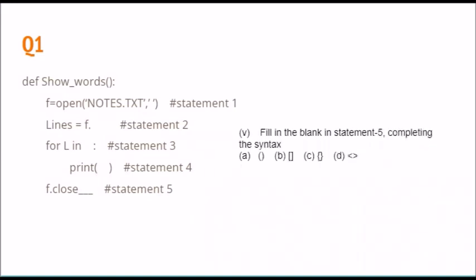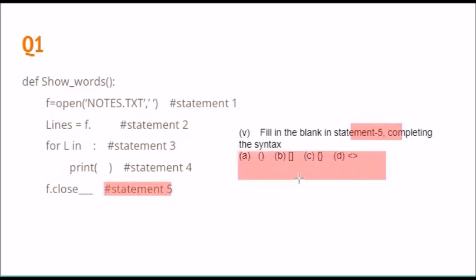For statement number five in the show_words function, we need to fill in the blank. Since close is a function, we need to use the correct bracket syntax. So the correct answer is option B.